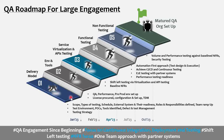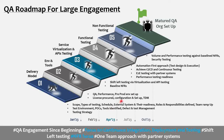To recap how we build a QA roadmap for a large engagement: Step 1 is figuring out scope, type of testing, and testing strategy. Step 2 is working on environments and tools. Step 3 is shift-left testing — starting QA early. Step 4 is an automation-first approach with CI/CD and partner system coverage for end-to-end testing. Step 5 covers non-functional requirements. The placeholder schedule shown can be adjusted to fit your specific environment and processes.